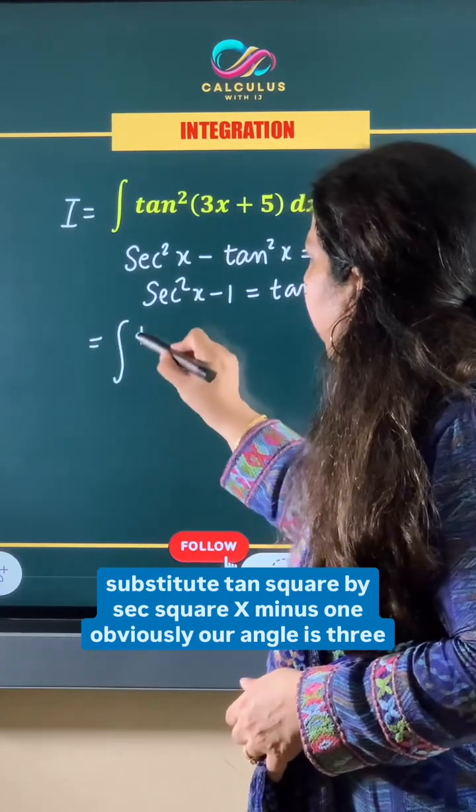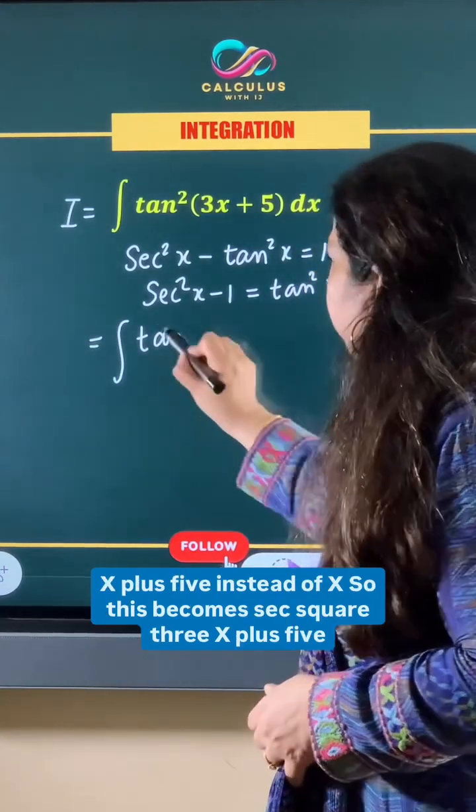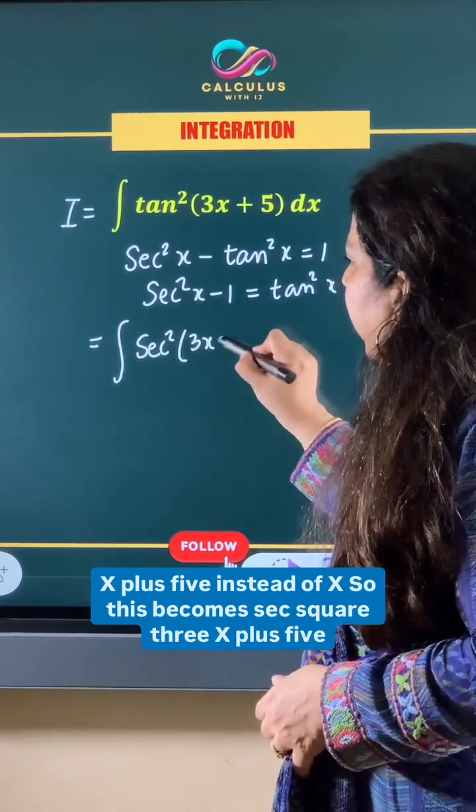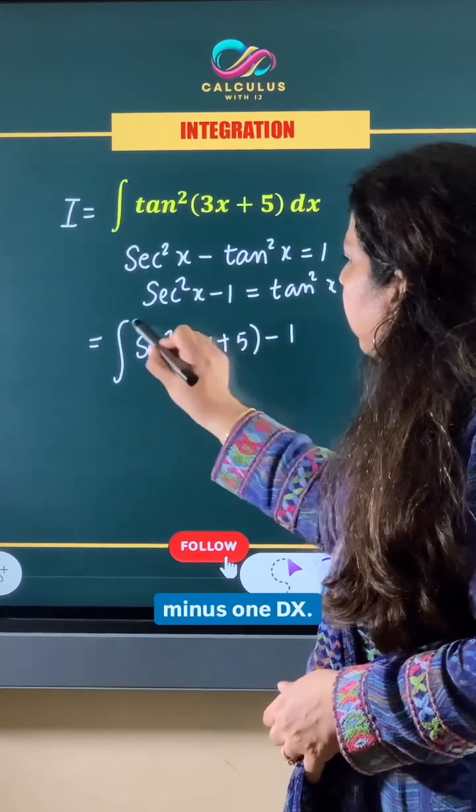Obviously our angle is 3x+5 instead of x. So this becomes sec²(3x+5) - 1 dx.